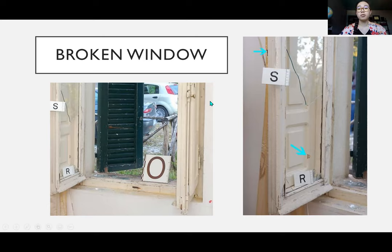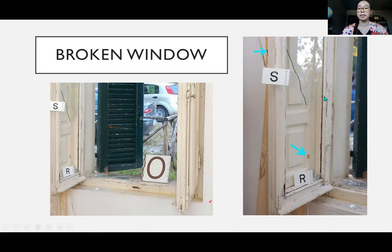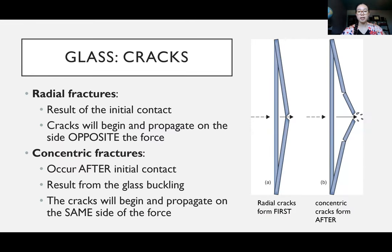Another thing we can do with broken glass evidence is analyze it to determine the direction of force — we can actually tell whether it was broken from the outside in or the inside out by looking at the cracks in the glass, which I don't think they actually did. We're going to go through this again in our glass trace evidence lecture, but because it's pertinent to this case I want to talk about it now as well.